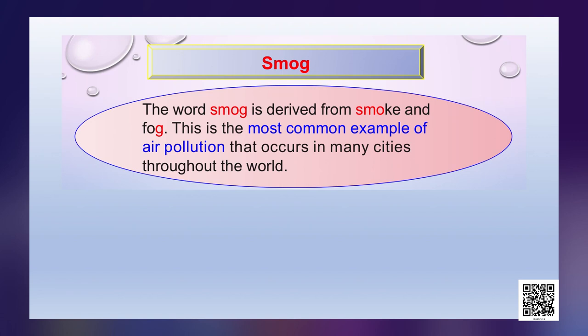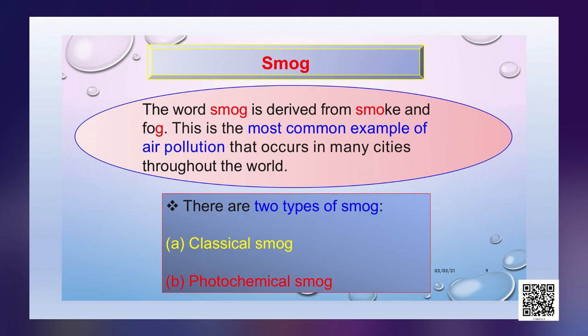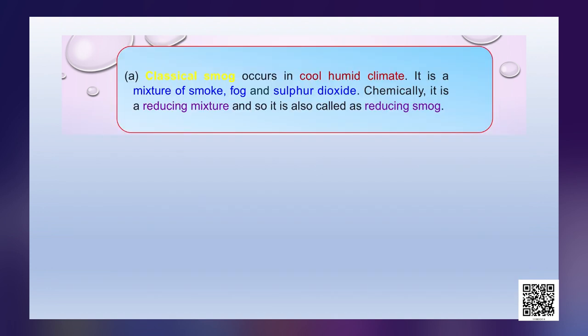The next kind of particles are smog. The word smog is derived from smoke and fog. This is the most common example of air pollution that occurs in many cities throughout the world. There are two types of smog: classical smog and photochemical smog. The classical smog occurs in cool humid climate and is a mixture of smoke, fog and sulfur dioxide. Chemically, it is a reducing mixture and is also called reducing smog.